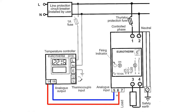Now, when the temperature controller turns on, it will provide a variable analog output signal to the input command of the power controller, and the higher the input command, the more power is applied to the load.